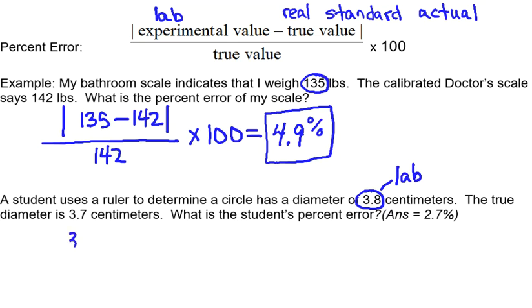So we're going to write 3.8. And we're going to subtract the true value, which is 3.7. Remember, we'll have an absolute sign, so that means that all positives or negatives disappear. And we will divide it by the true value, which is 3.7.